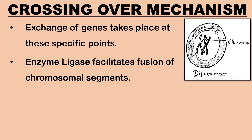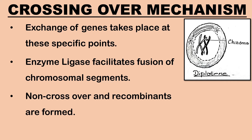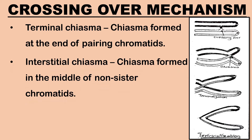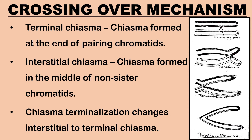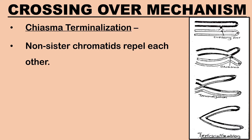Fusion of chromosomal segments at these points is facilitated by enzyme ligase. The parts of the chromatids where exchange of genes does not occur are known as non-crossovers. The parts where genes have been exchanged are known as recombinants. Depending on the position of chiasma formation, chiasma are of two types: when chiasma are formed at the end of pairing chromatids it is known as terminal; when the chiasma is formed in the middle of non-sister chromatids it is known as interstitial.